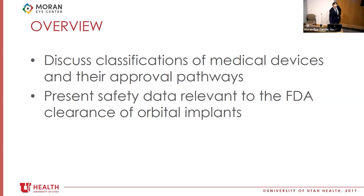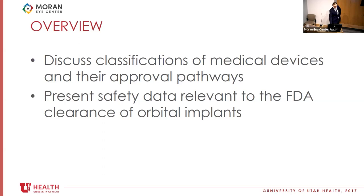The FDA class designated to a medical device before it can be marketed in the United States is based on both intended use and indications for use. Class 1 devices — such as band-aids — are subject to general controls: basic production and safety guidelines applying to all U.S. marketed medical devices. Class 2 devices — including orbital implants and the vast majority of devices we use daily in ophthalmology — are given the designation of 'FDA cleared' through something called the 510(k) pathway, with some nuance I'll discuss in a moment.